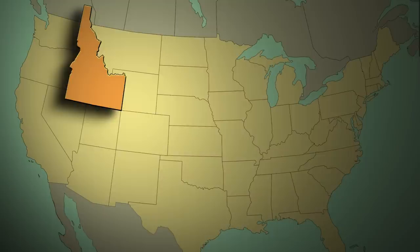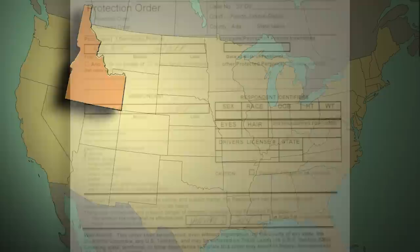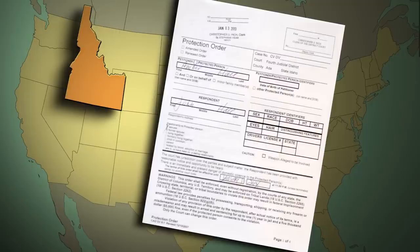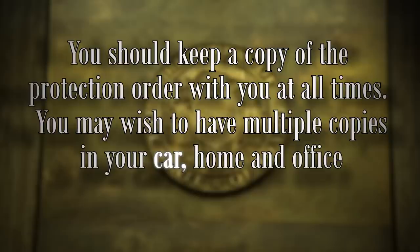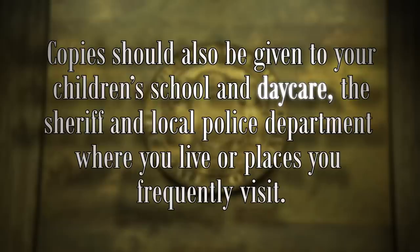The protection order granted is enforceable in other states as well. If either you or the respondent live in or plan to visit another state, you should receive a certified copy of the order and deliver it to the local sheriff or local police department in that state. You should keep a copy of the protection order with you at all times. You may wish to have multiple copies to keep in your car, home, and office. Copies should also be given to your children's school and daycare, the sheriff and local police department where you live, or places you frequently visit.